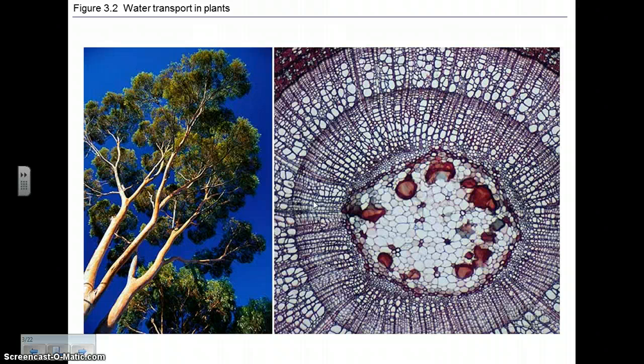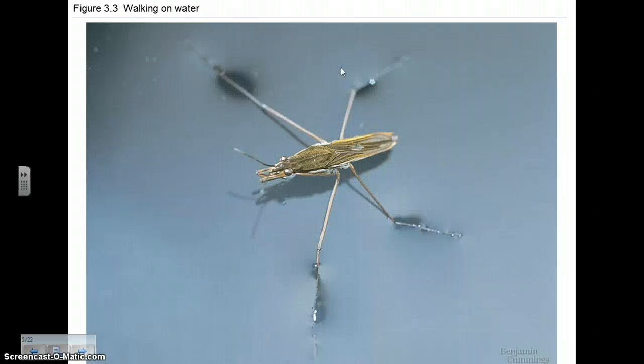We'll see how the properties of water allow it, for example, to move up trees that could be 100 or so feet tall through these narrow vessels inside the tree, these xylem vessels, and how this water strider, for example, can essentially walk on the water due to the surface tension of the water and how the bug is so light that it doesn't break those bonds that exist between those water molecules.